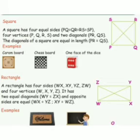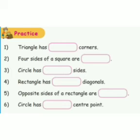Now let us go to see the practice questions. First one: triangle has dash corners. Let us see the answer: three. Second: four sides of a square are dash. Equal. Third question: circle has dash sides. No sides. Rectangle has dash diagonals. Two. Fifth question: opposite sides of a rectangle are equal. Sixth question: circle has dash center point. Answer: one.